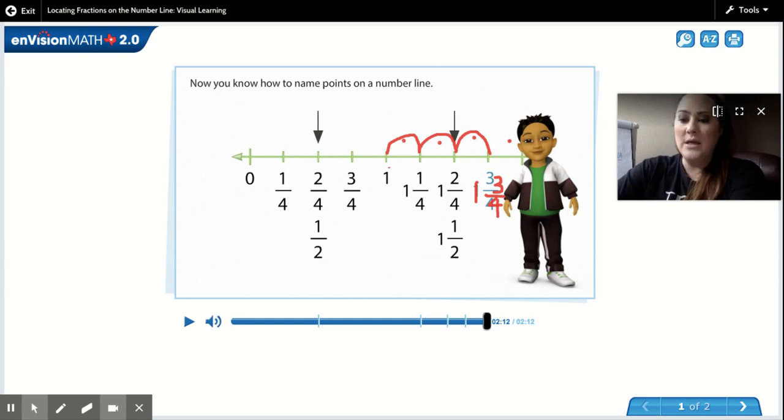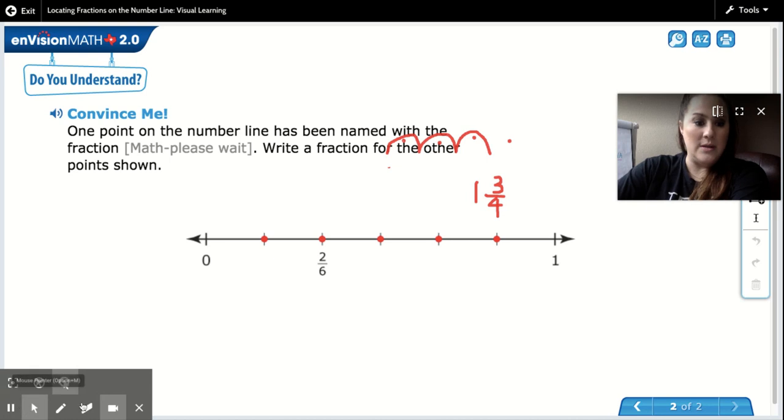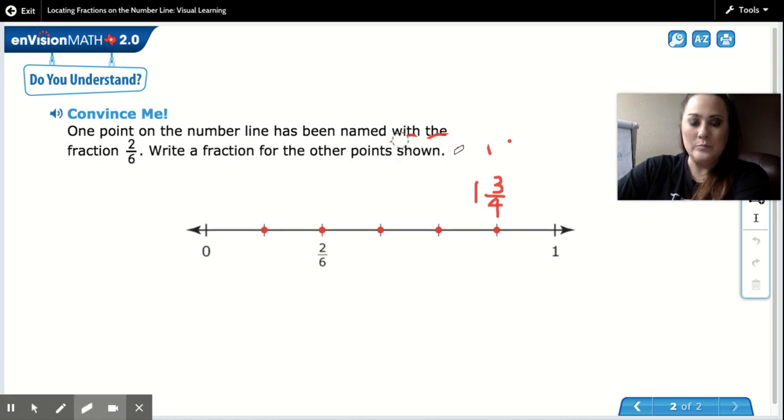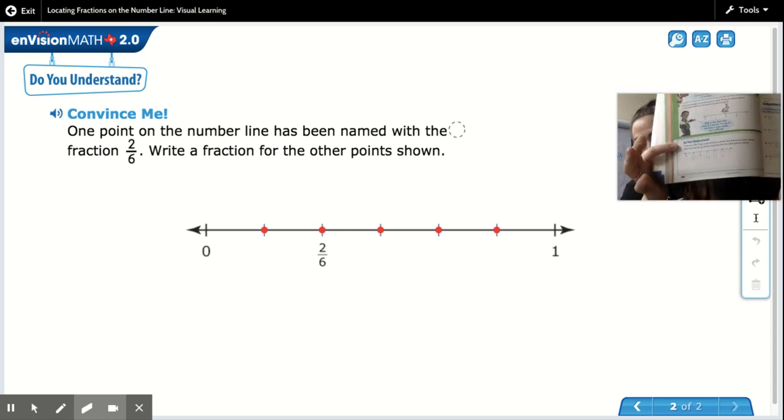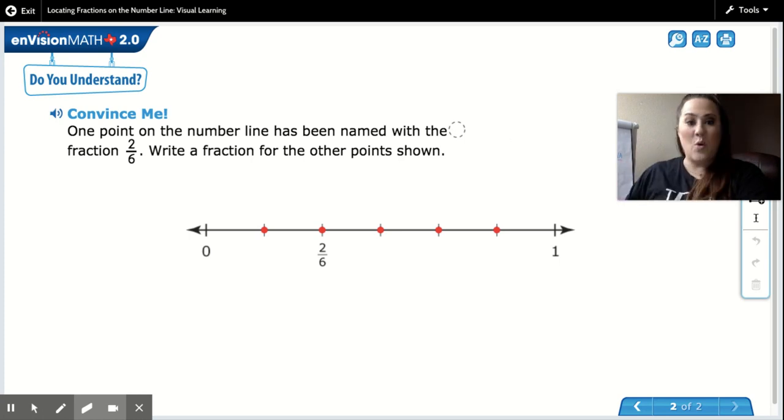So I want you to go, let me erase what I have on here. Okay, so you should now be on page 584. And you'll see the same question that I have right here on the screen. It says one point on the number line has been named with the fraction two-sixths. Write a fraction for the other points shown.